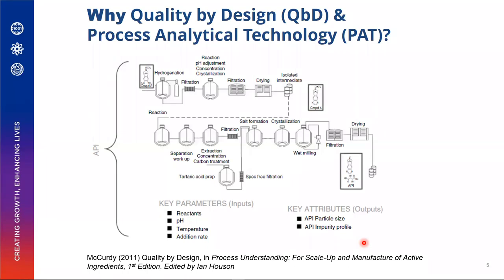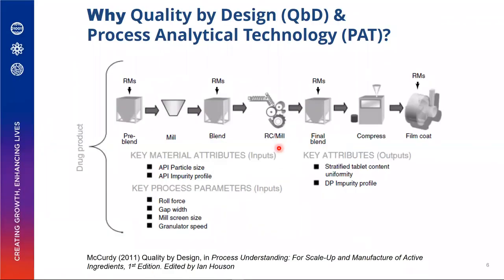Working on the manufacturing floor, you realize that each step has its own particularities and can fail at many points. Having a means of tracking what's going on across all these complex steps would be very useful. In secondary manufacturing — pre-blend, milling, blending, compressing — you have different sets of key material attributes, operational parameters like roll force, mill screen size, granulation speed, and key attributes including stratified tablet content uniformity and impurity profile.